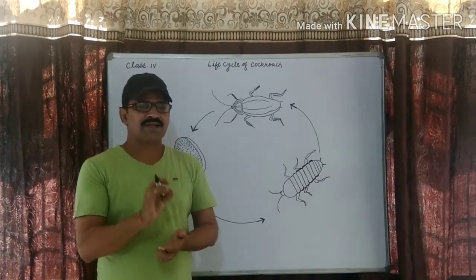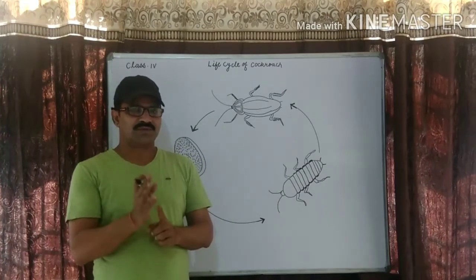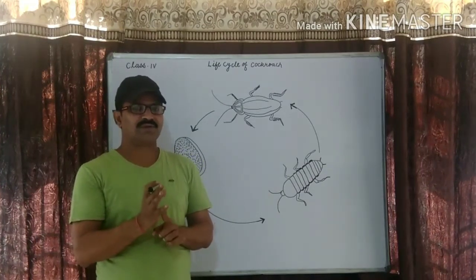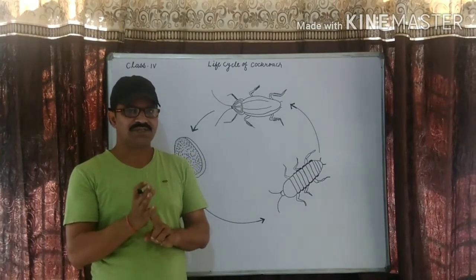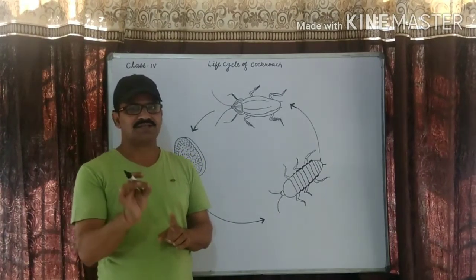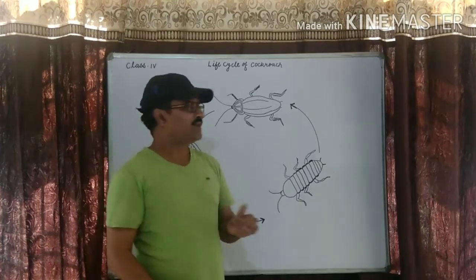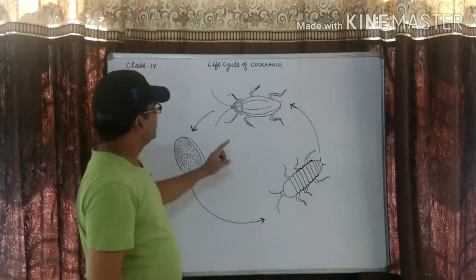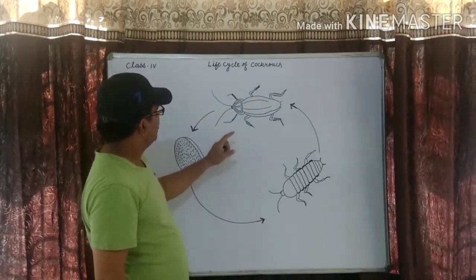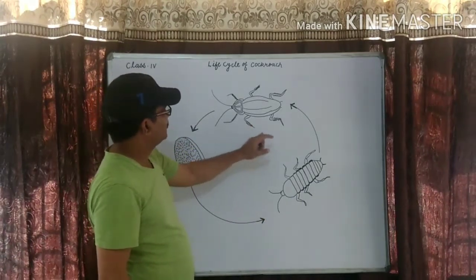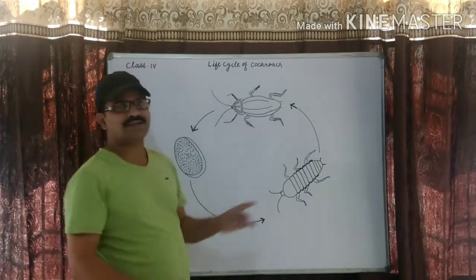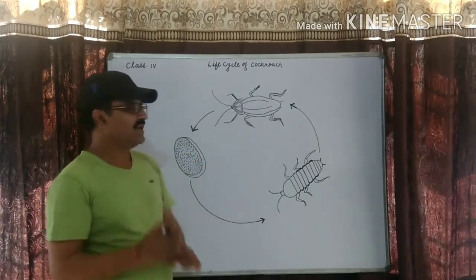In insects like the grasshopper, cockroaches have 3 stages. So today we will discuss the life cycle of the cockroach. There are 3 stages.